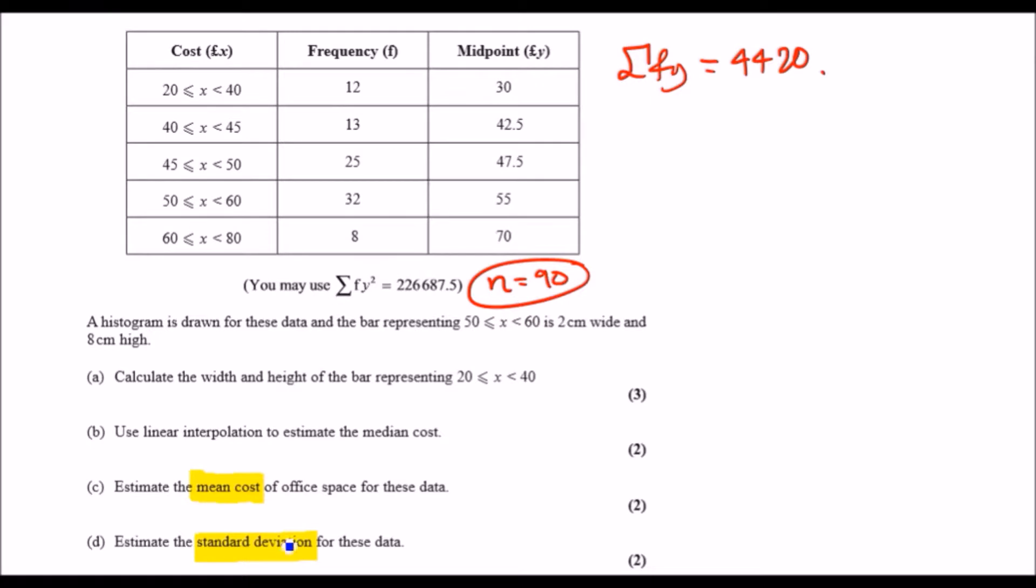Now let's go ahead and actually solve this problem. To calculate the mean, which is quite straightforward, it's just the sum of fy, the total you have, over the number which is 90. And this will just give you 4420 over 90, which should give you exactly 49.11 recurring, or you can leave it as a fraction.